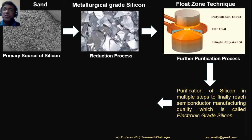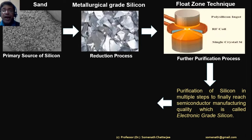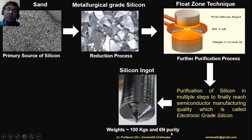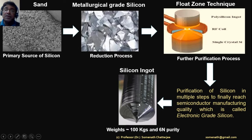From the float zone technique we find single crystal silicon, which is electronic grade silicon. This comes in the form of ingots — silicon ingots weighing nearly 100 kg. The purity is 6N, meaning 99.99999% purity, which we can achieve from the silicon ingot.